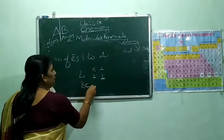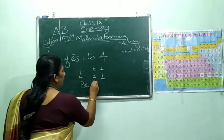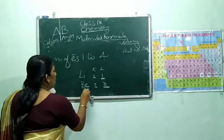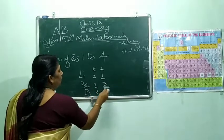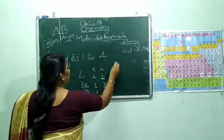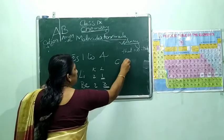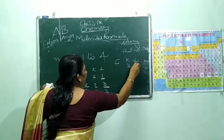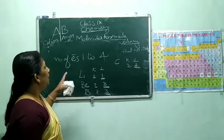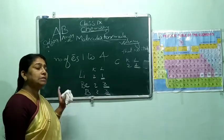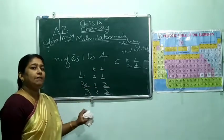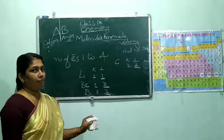Beryllium: K2, L2 — valency 2. Boron: K2, L3 — valency 3. Carbon: K2, L4 — valency 4. So if the number of electrons in the valence shell is one to four, the valency will be that number itself.